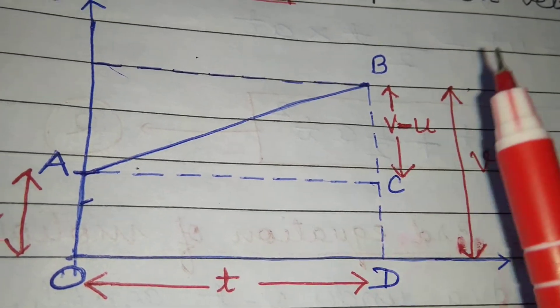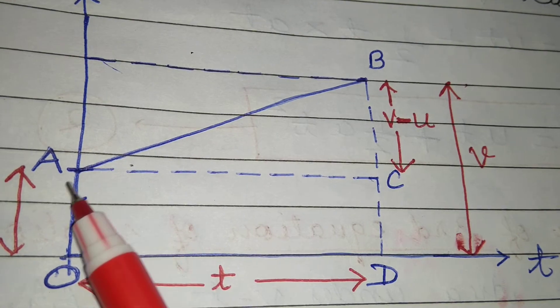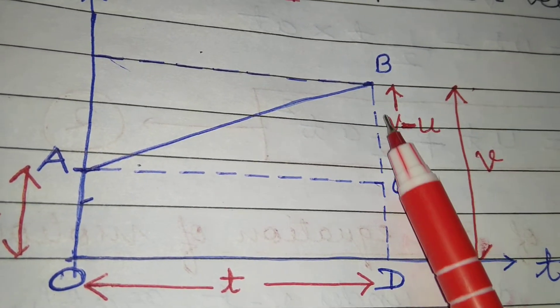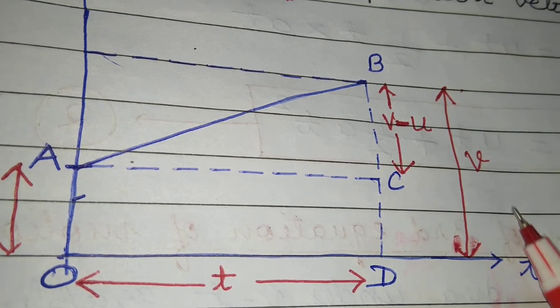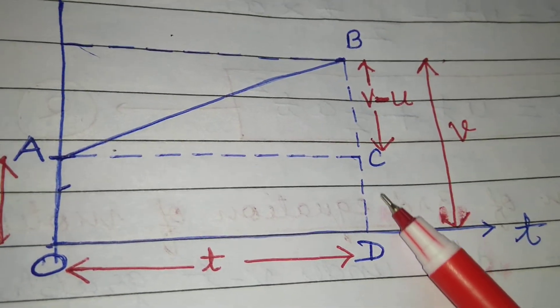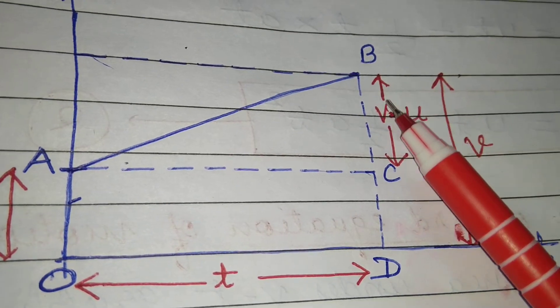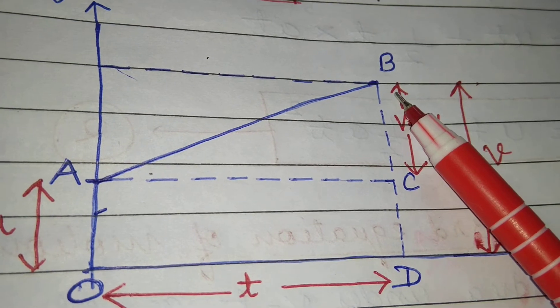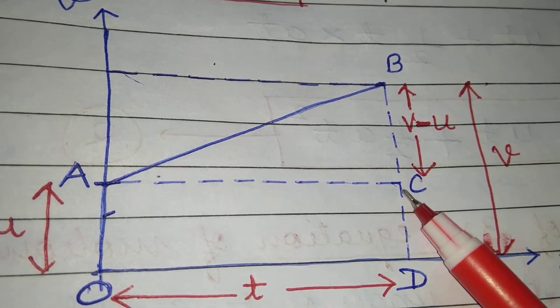Now the slope of this graph is given by BC upon AC. And what is BC? The value of BD is v and the value of OA is u. That's why CD is also u, and then BC will be equal to v minus u. So the slope will be v minus u upon AC, that is t.